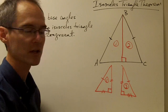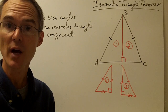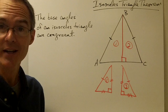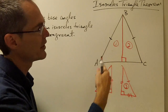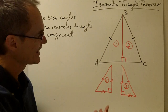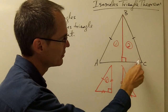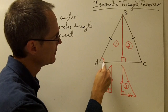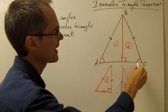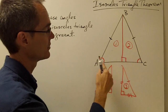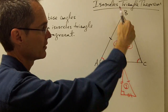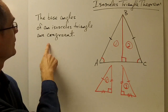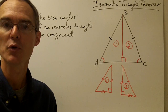Therefore, triangle number one and triangle number two are congruent triangles. If triangle number one and triangle number two are congruent, that means all of their corresponding parts, including their corresponding angles, must also be congruent. Therefore, this angle and this angle — the base angles of this isosceles triangle — must be congruent. And we have just proved that the base angles of an isosceles triangle are congruent.